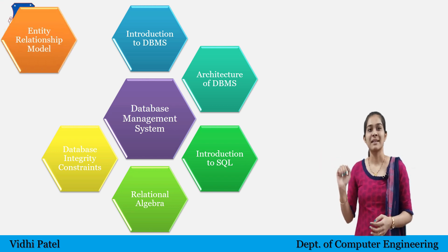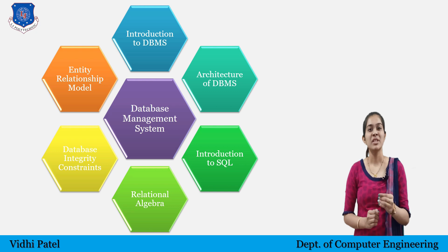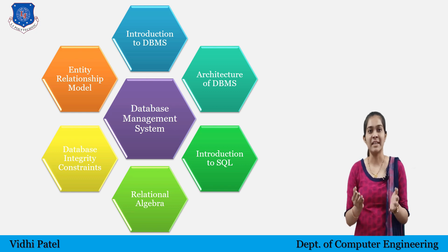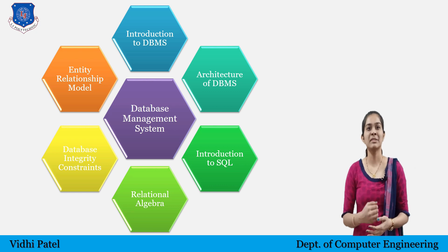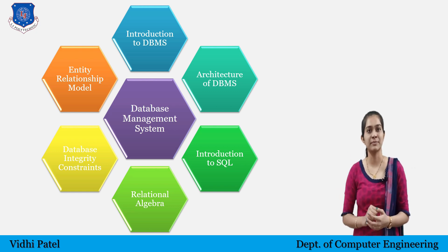Part 6: Entity Relationship Model. This will contain the Entity Relationship Model, also called the ER Model. The three basic notations of the ER Model — Entity, Attribute, and Relationship — will be discussed in this part. After that, how to make ER Models will be taught using an example. All these topics will be covered in this series.